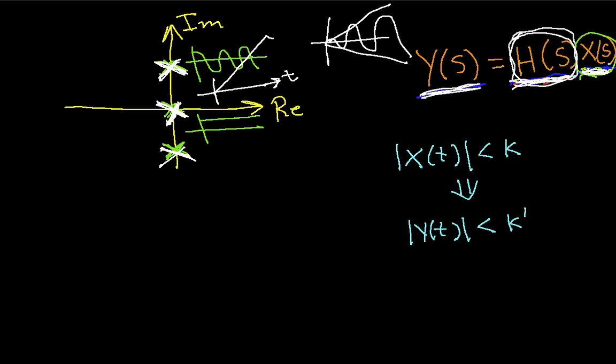So, a system is stable without reservation if it only has poles in the left half plane. A system is marginally stable if it has poles either in the left half plane or on the imaginary axis. But, if a system has even a single pole in the right half plane, then you know it's going to be unstable.